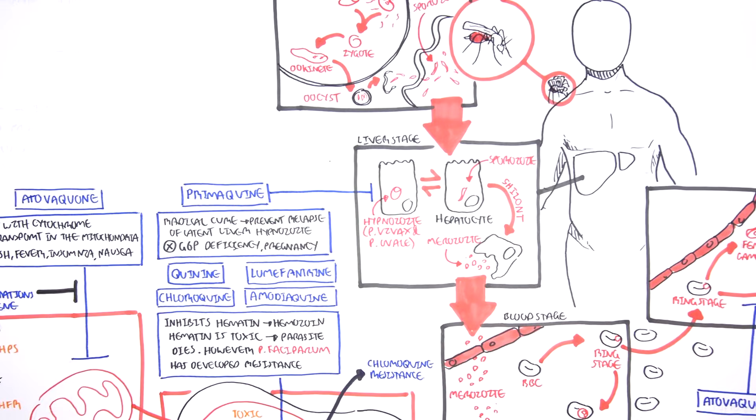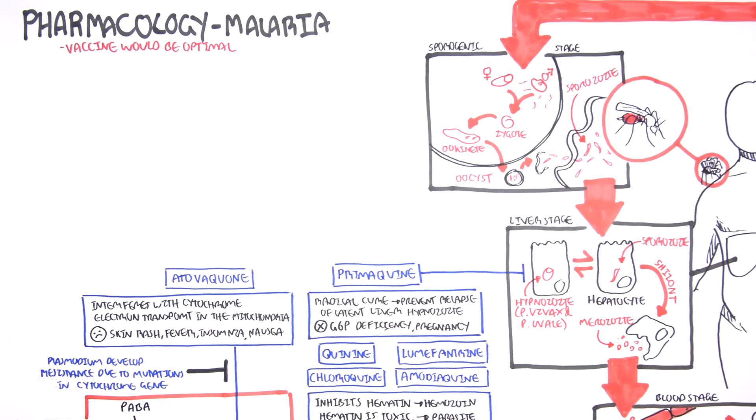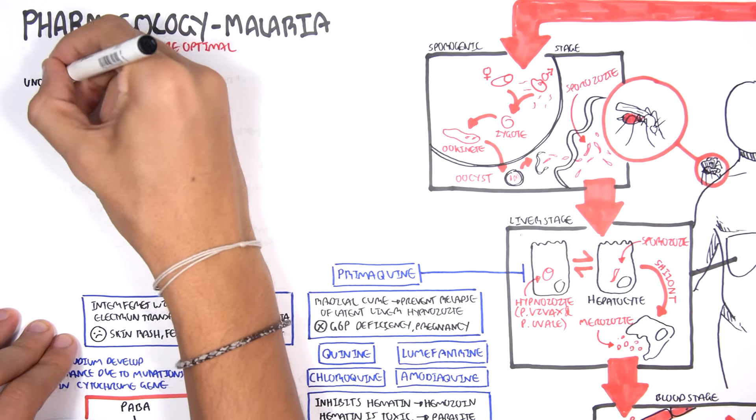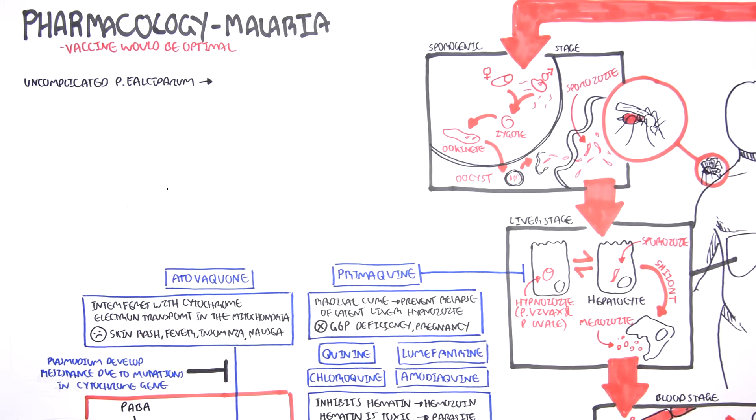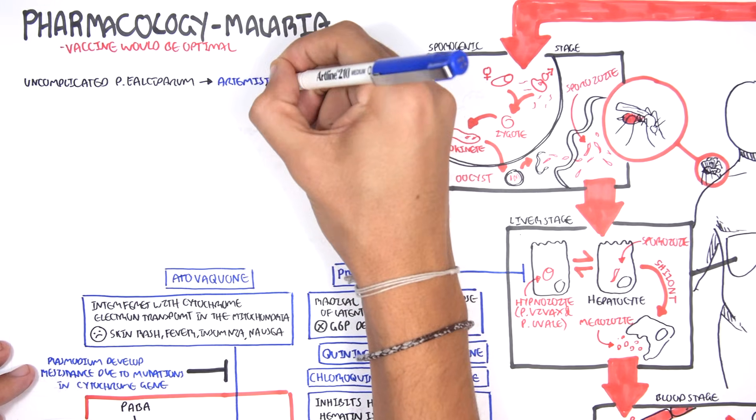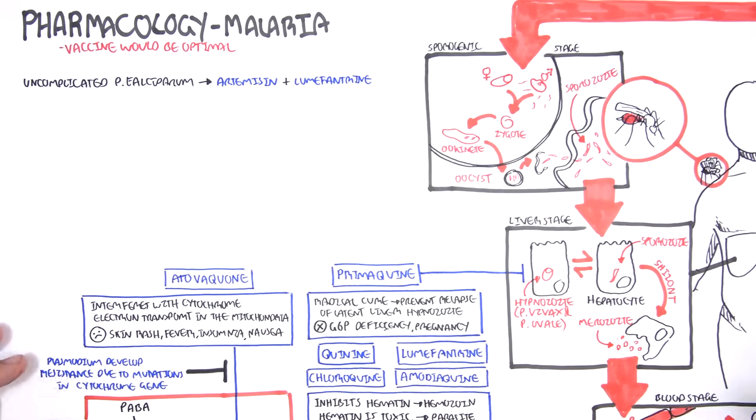Now, let us look at what to give to certain patients in different scenarios. We'll mainly focus on P. falciparum, because that's the main strain of plasmodium that is associated with morbidity and mortality in the developing countries that have high prevalence of malaria. For uncomplicated P. falciparum malaria, we would give a patient artemisinins plus a quinolone, such as, firstly, lumefantrine.